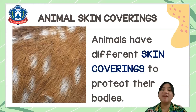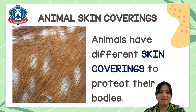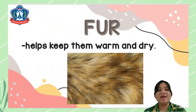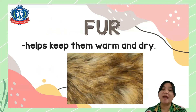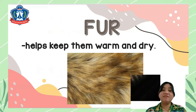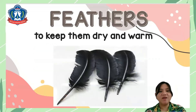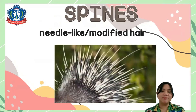Animals have different skin coverings to protect their bodies. What are the skin coverings of animals? Fur helps to protect their bodies and keep them warm. Scales are small thin plates. Feathers keep them dry and warm. And spines are modified hairs.